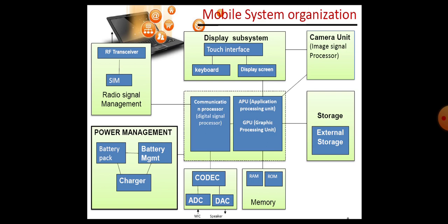The GPU — graphic processing unit — is also connected with external usage, where your images, videos, and audios are externally stored. For processing image, audio, video, and any type of graphical interface, we need primary memory also — that is, RAM and ROM.